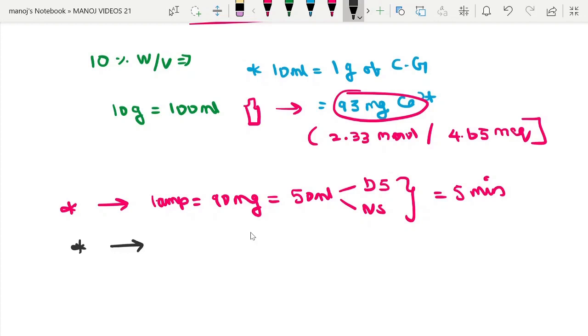Take 10 ampules of calcium gluconate, each containing approximately 90 mg of elemental calcium. Dilute in one liter of either D5 or NS.